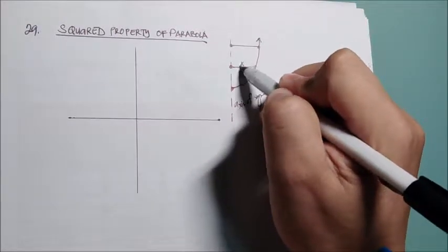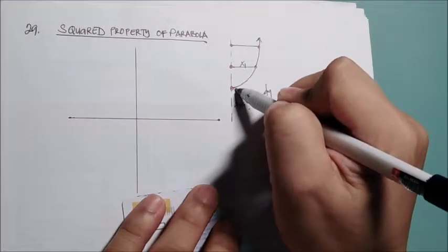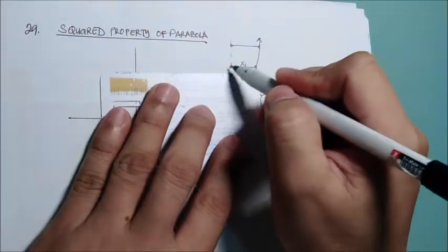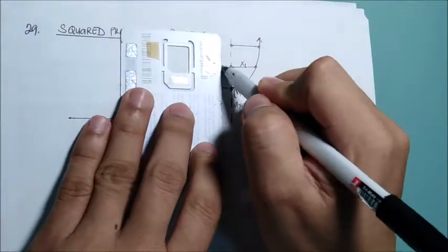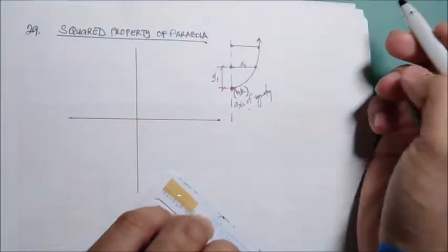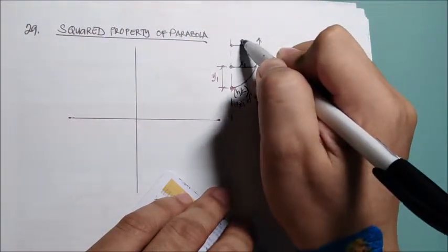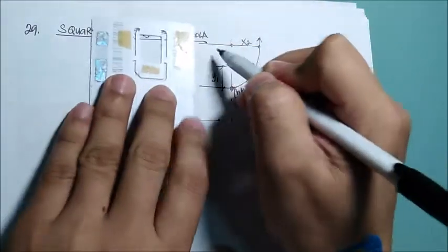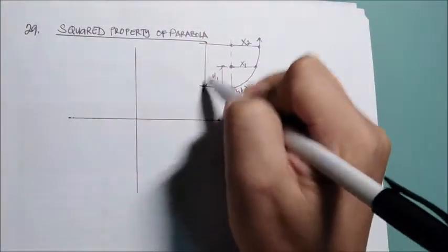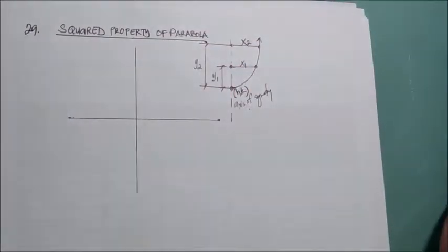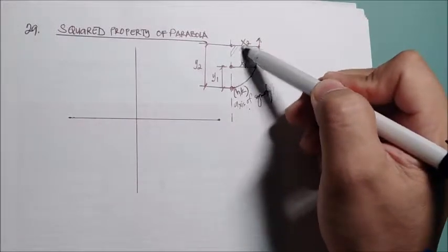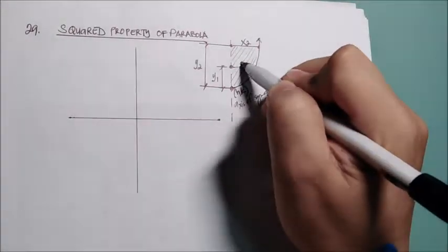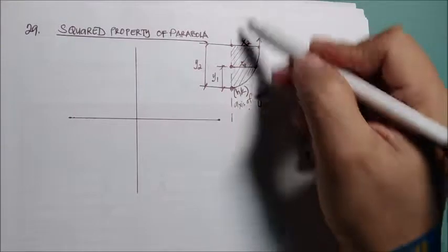If we denote this as x1 from the vertex, from the vertex hk, and denote this as y1. And from this point to x2 and from the vertex also to be y2. So assuming this is the half area of our parabola, and we have x1, x2.